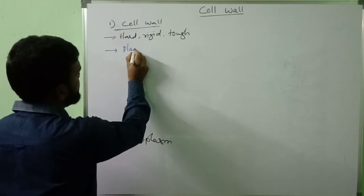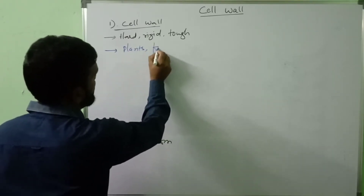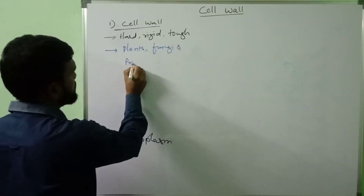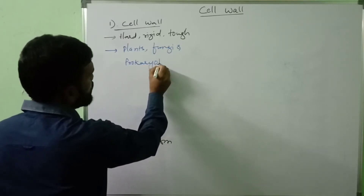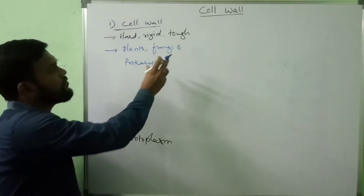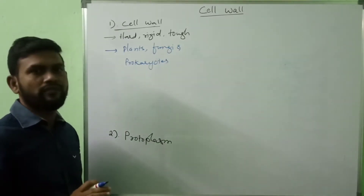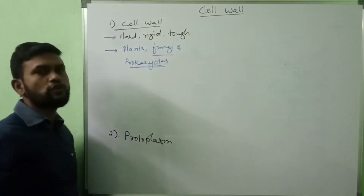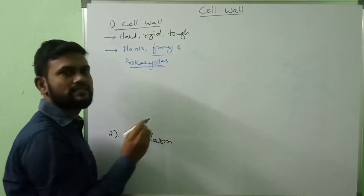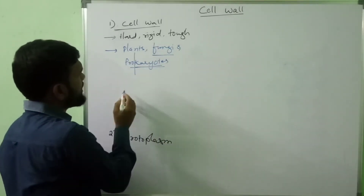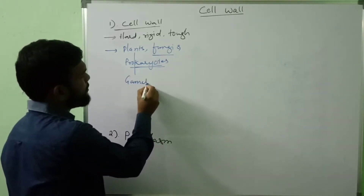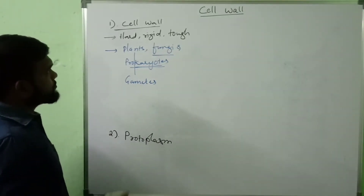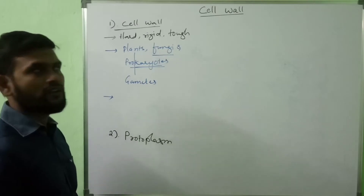Cell wall is found mainly in plants, next fungi, and prokaryotes. In prokaryotes, cell wall is absent in mycoplasma — except mycoplasma, remaining prokaryotes have cell wall. In fungi, myxomycetes members do not have cell wall. In plants, gametes do not contain cell wall.